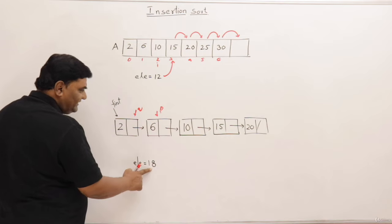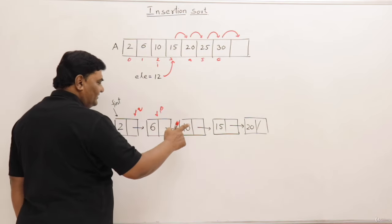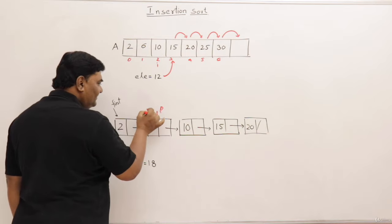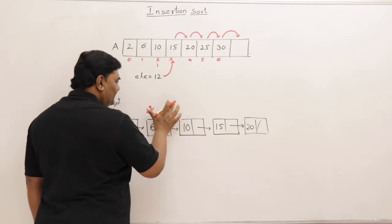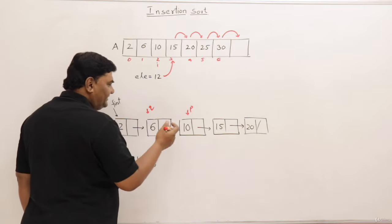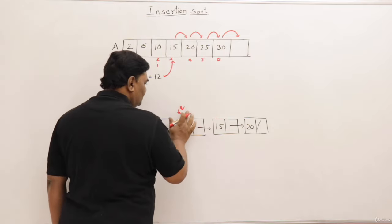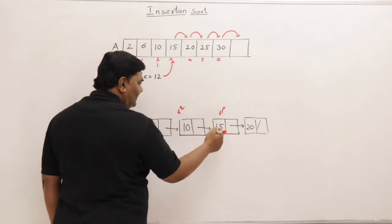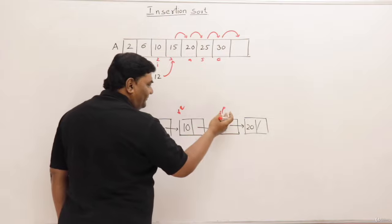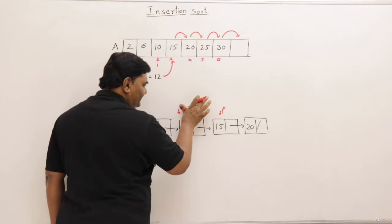This is smaller than 18. So again move P. So first Q then move P and then move P. So first Q then move P. This is still smaller. 15 is smaller than 18. So move Q upon P and move P to next.